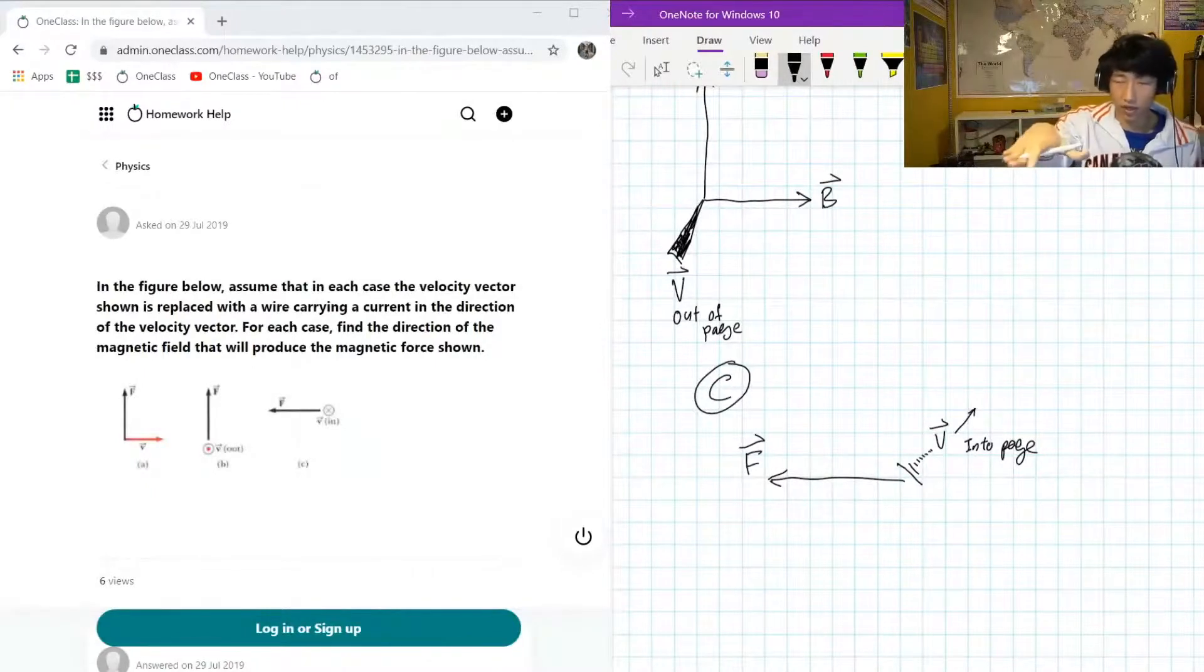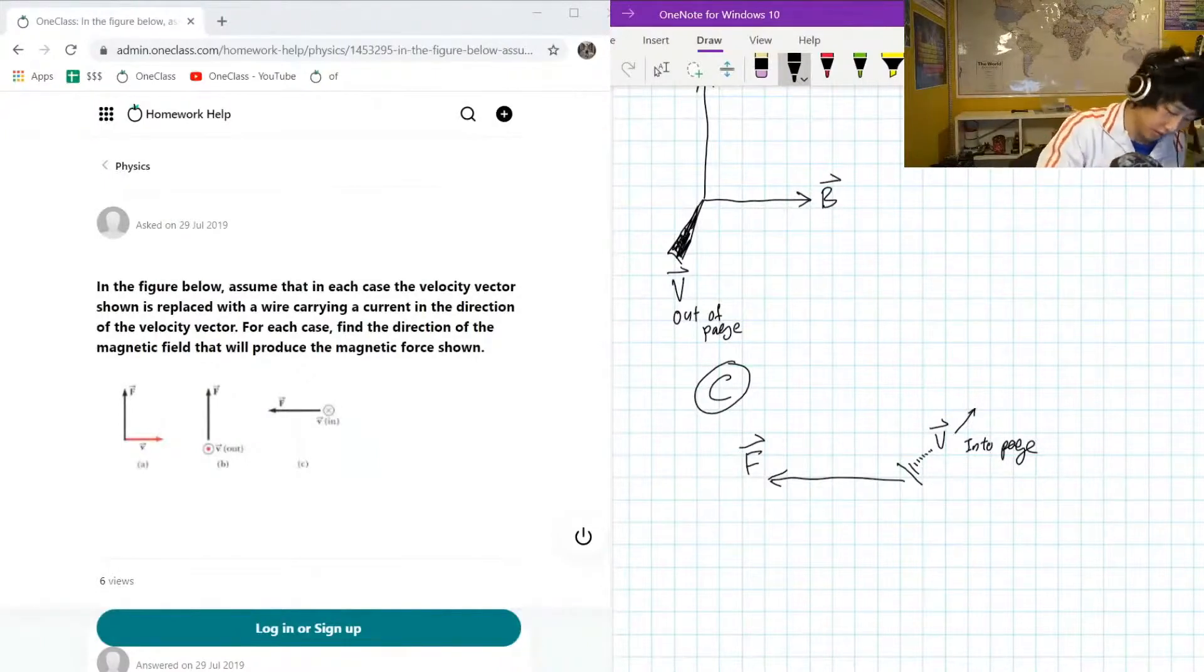Our B field is going down for real. Okay, so it's got to be going down. That's the only way that this could work. B field. Only way this could work with our right hand. Don't use your left hand rule, unless you're using like negative charges, but yeah, typically you're going to want to stick to your right hand rule.